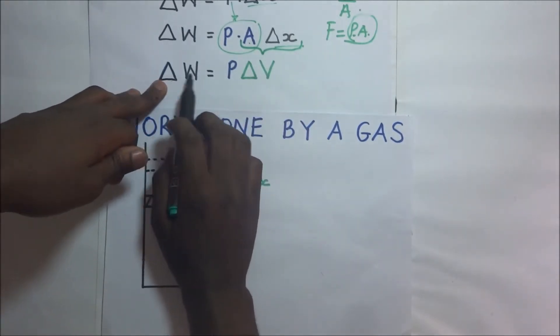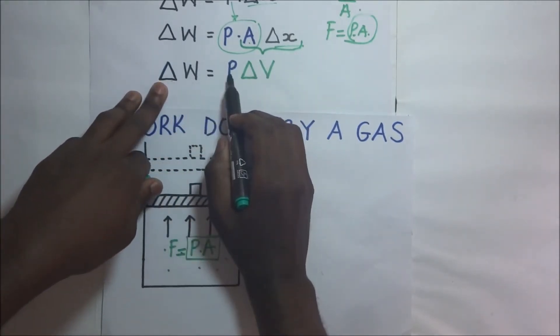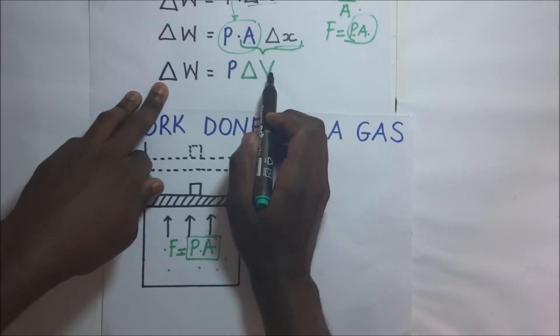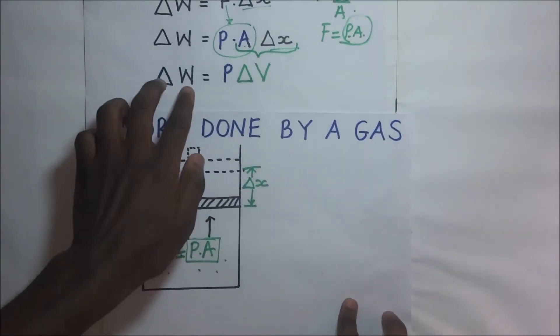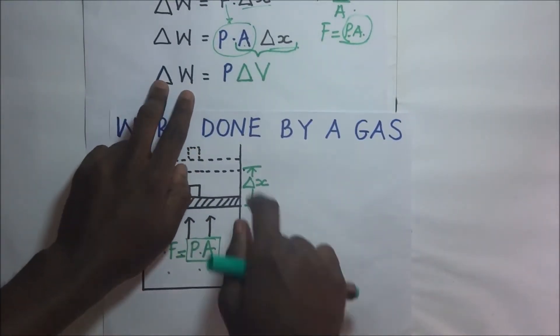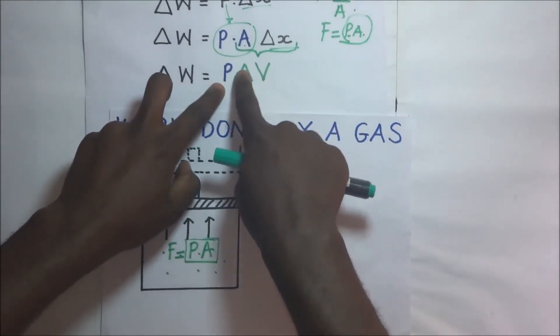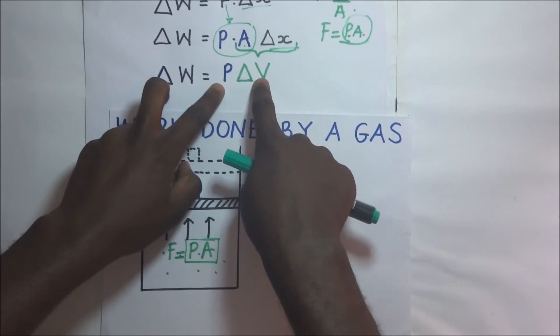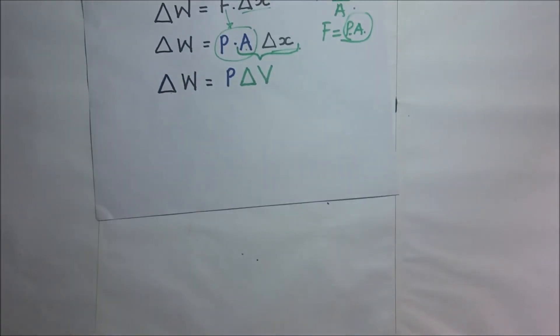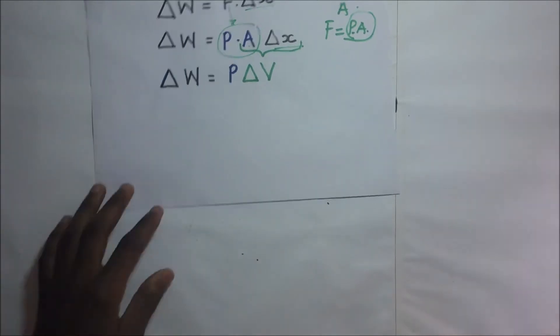Now here we are talking about a small change in work being done to give an effect of a very small change in the volume of the gas. Now in case you want to find the total work done, that is if the volume changes by a finite amount, let's say this volume is changing from V1 to another amount V2.